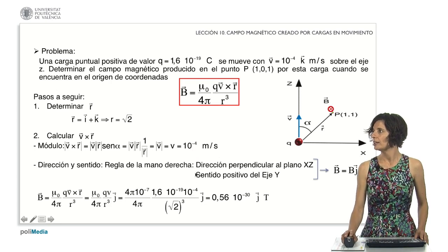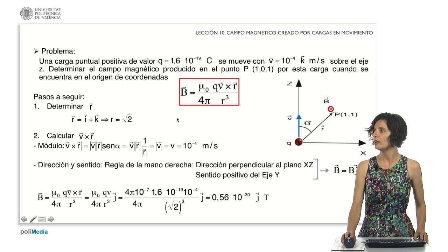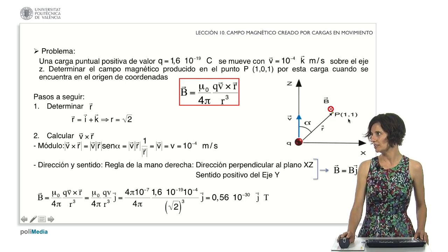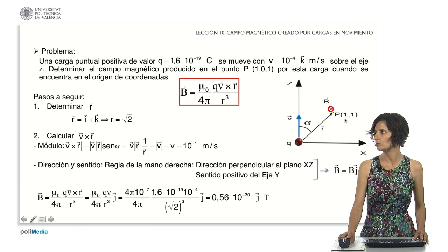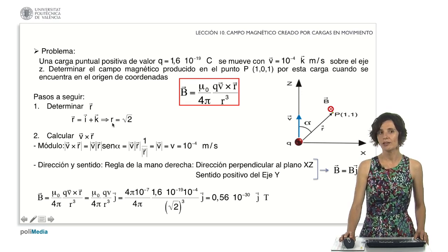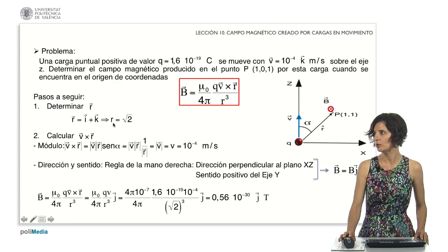To proceed, we need to consider the expression we've reviewed earlier and begin by calculating the position vector. This vector links the charge to point P, where we aim to determine the field. Given the charge is positioned at the origin, the position vector in this scenario shares the same coordinates as point P, which are x=1 and z=1. Hence, we can express it as the sum of unit vectors i and k. Its magnitude equals the square root of the sum of the squared components, resulting in the square root of 2.